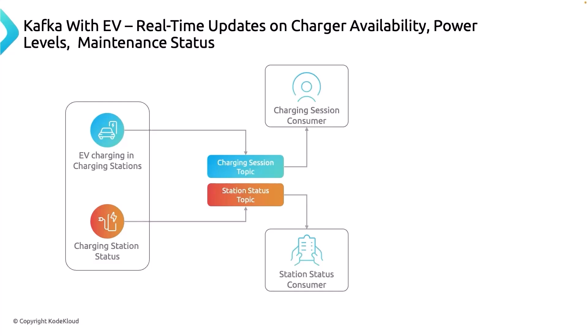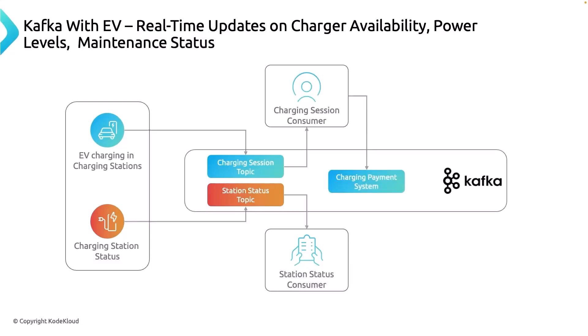Imagine a charging station with 15 chargers — you'd want to know if any are free, or even book one so it's available when you arrive. You can only know this through real-time streaming updates of the charging machine status, sent via IoT sensors. All the information in the station status topic can be aggregated and sent to an app where consumers can view availability.